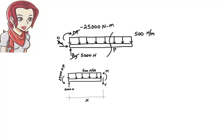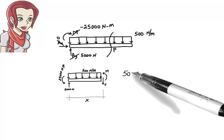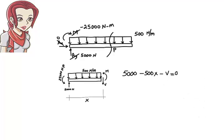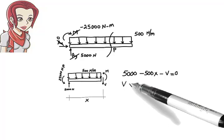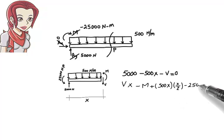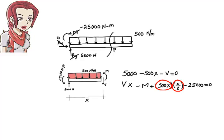Writing the equilibrium equations in terms of x: the sum of forces in the y direction gives 5,000 minus 500x minus V equals 0. Here, 500x is the area of the distributed load applied to the segment — the rectangular load has a height of 500 and a base of x, so its area is 500 times x. The sum of moments about point A gives: V times x minus M plus 500x times (x over 2) minus 25,000 equals 0. Here, x over 2 is the distance from the centre of the distributed load area to point A, giving the moment of the distributed load about A.